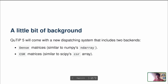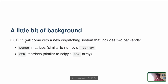Currently, Qtip is in version 4, and there is a new version, Qtip 5, that is under active development. The nice feature of this new version is that it includes a new dispatching system that allows the use of multiple backends. Examples of those backends are the dense matrices, very similar to NumPy, that are natively implemented in Qtip 5, and also the CSR matrix that are similar to SciPy's CSR array.